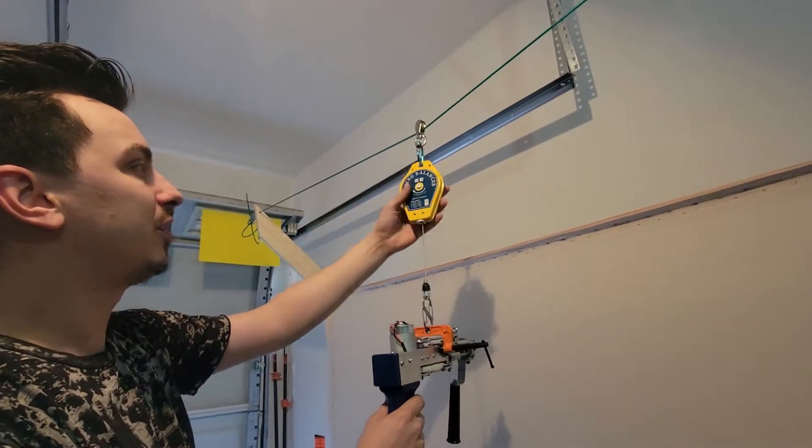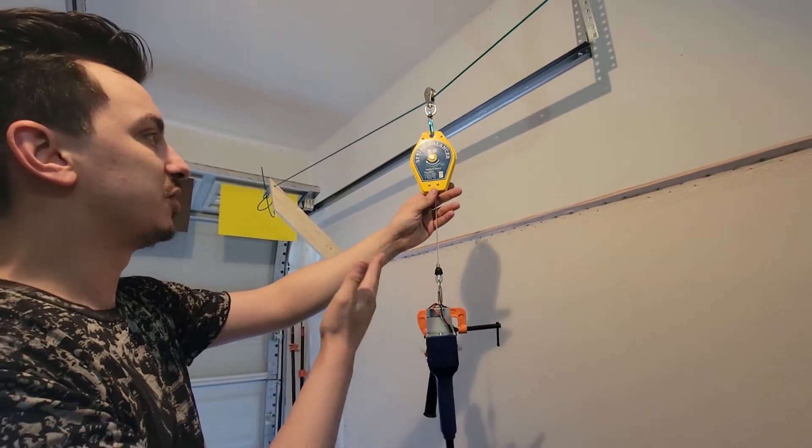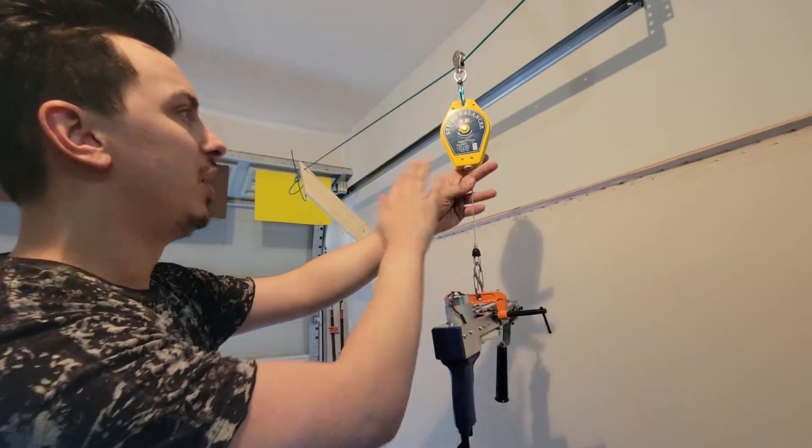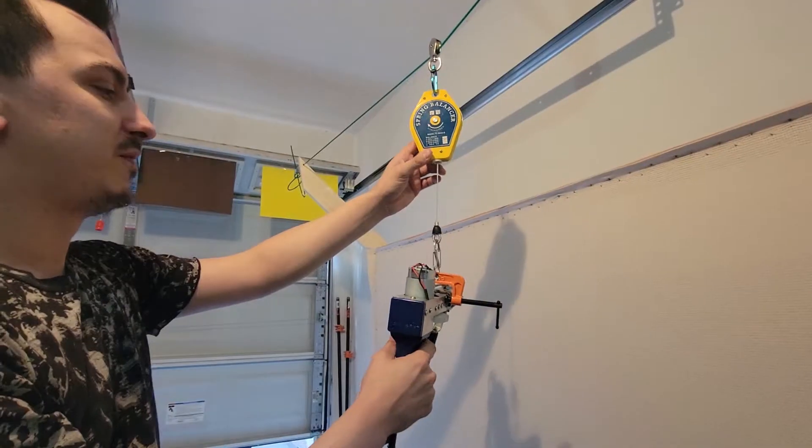Attached to that pulley via carabiner is a spring balancer. Now this is like the heart and soul of this whole setup. You can find this guy on Amazon, not very expensive, but you want to make sure you get the right weights for it.